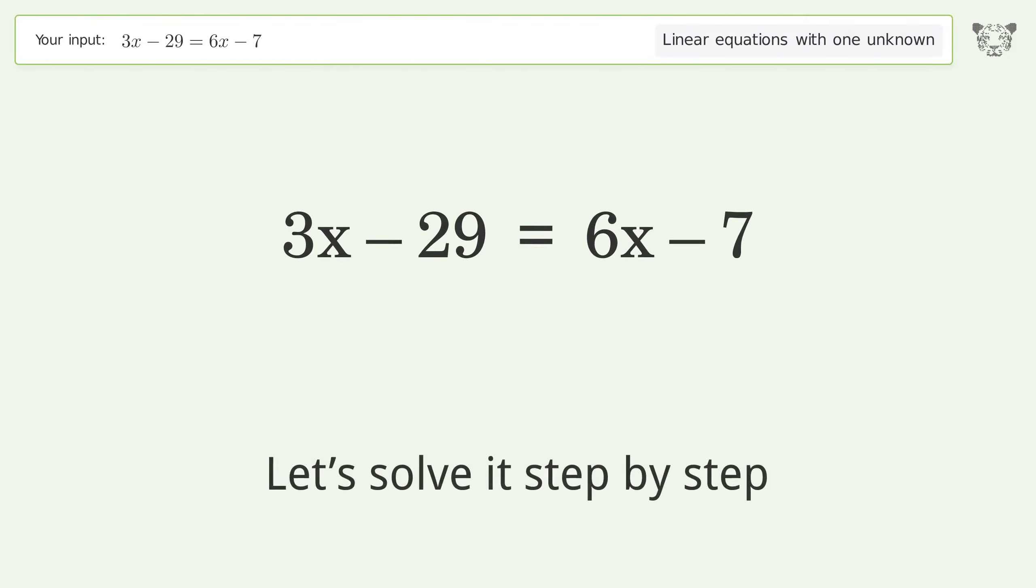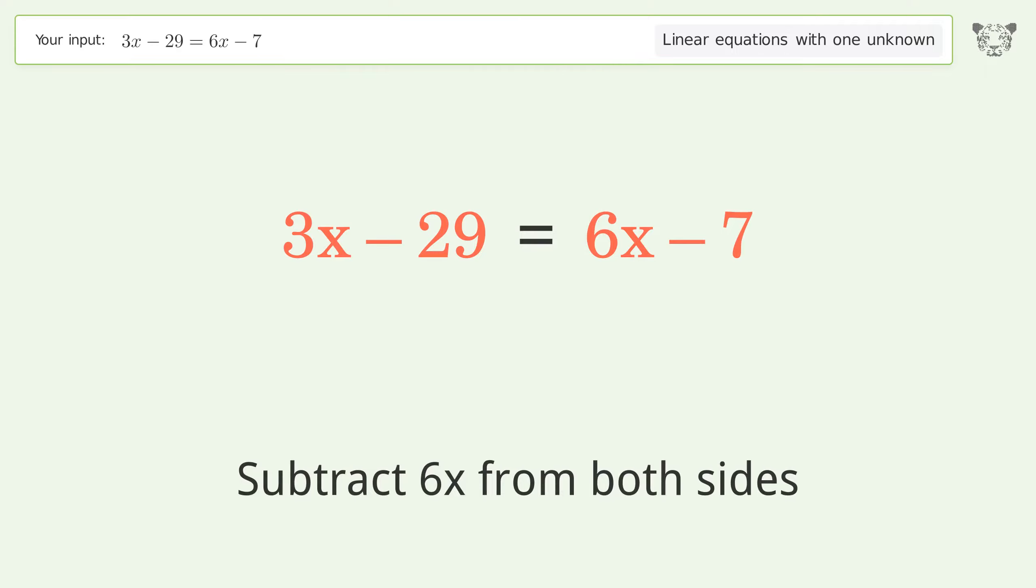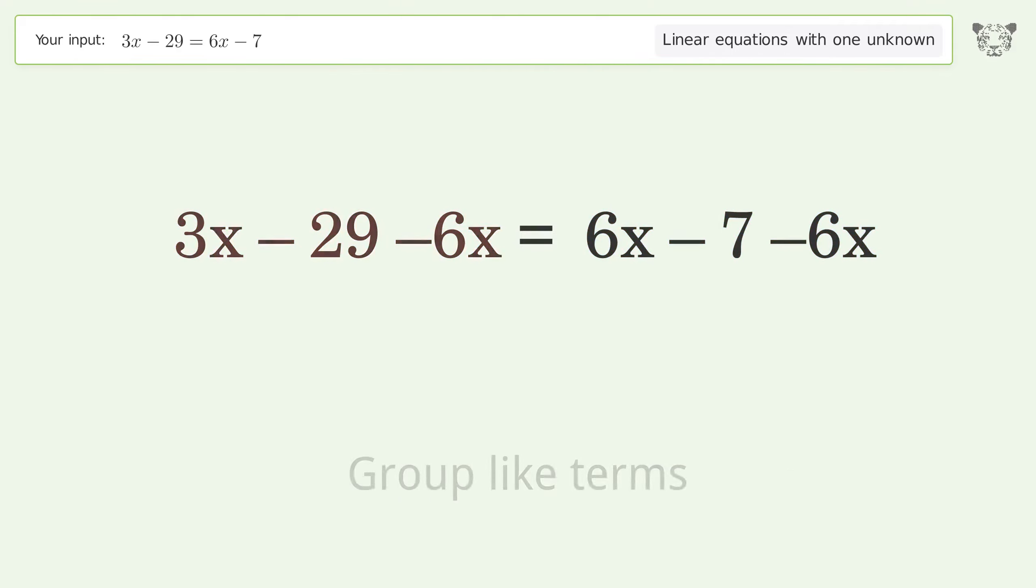Let's solve it step by step. Group all x terms on the left side of the equation. Subtract 6x from both sides, then group like terms.